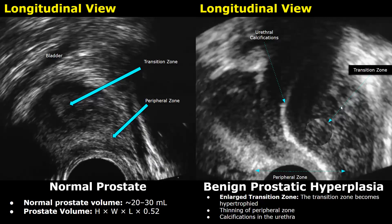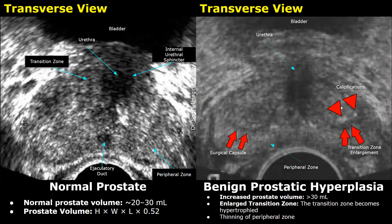This is an image showing a normal prostate. This echogenic area is the peripheral zone, this hypoechoic area is the transition zone, this central hypoechoic region is the urethra, and up here is the bladder.